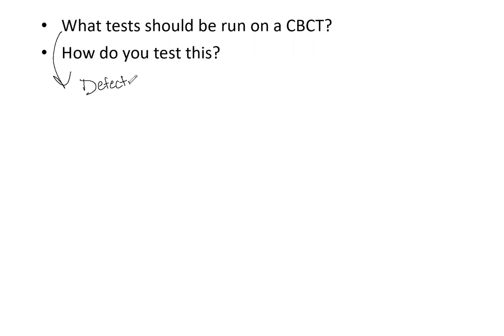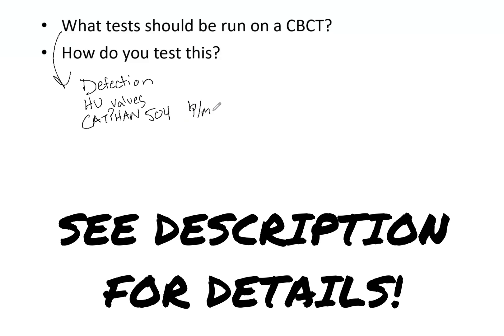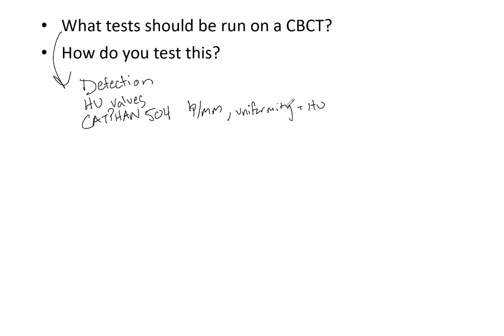Ideally, you have done them and can talk about real hands-on experience from your clinic. First, of course, detection — if something bumps that detector on the cone beam CT, it needs to throw a fault and stop its motion. You then have your HU values; whether you use offline adaptive radiation therapy or not, you need to verify HU values are correct. There's also a CAT phantom that you should be familiar with — it will allow you to verify the resolution, specifically line pairs per millimeter, and also helps you check uniformity and HU values.